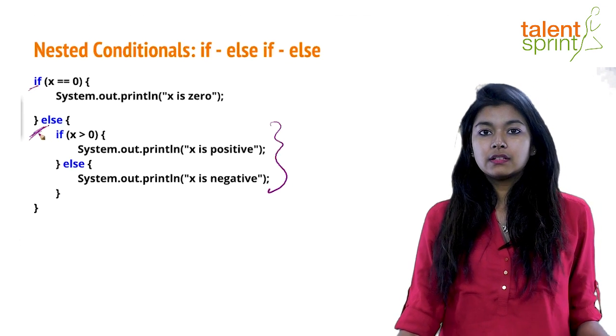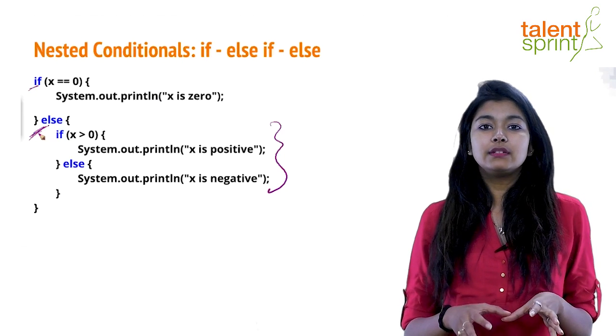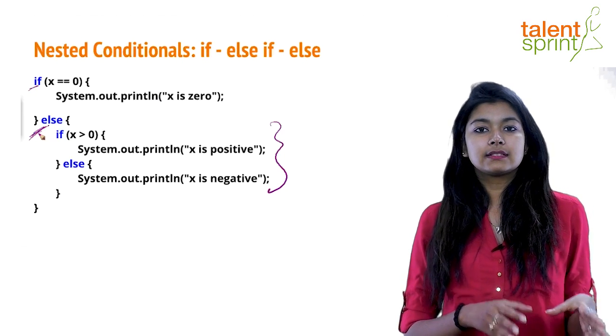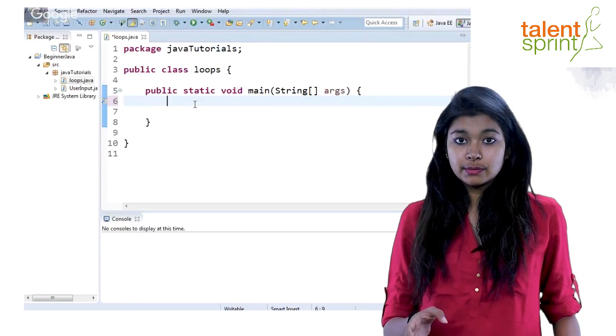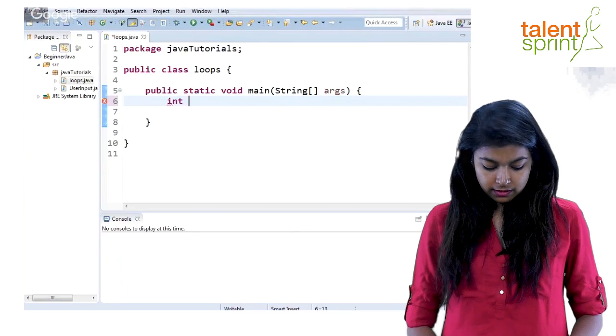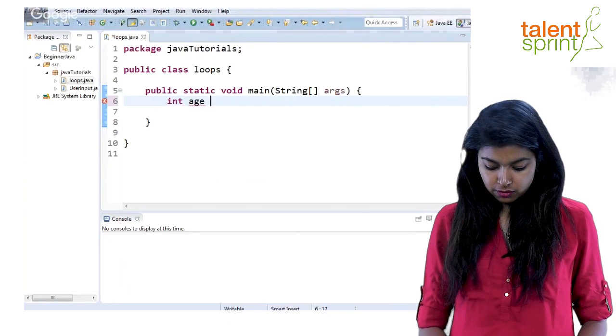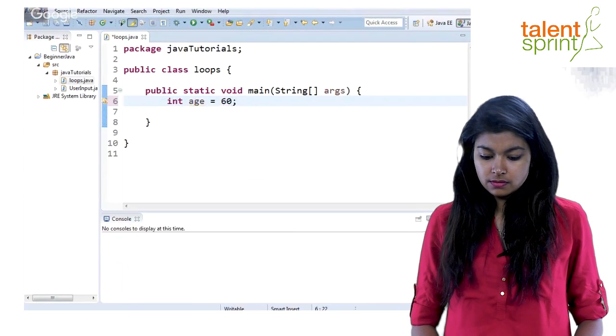Now moving on let me quickly write a very small piece of code to explain how this translates into coding. As you see here I have created a sample class called loops and inside this let's create an integer variable that will hold the age. Let's say initialize it to 60.